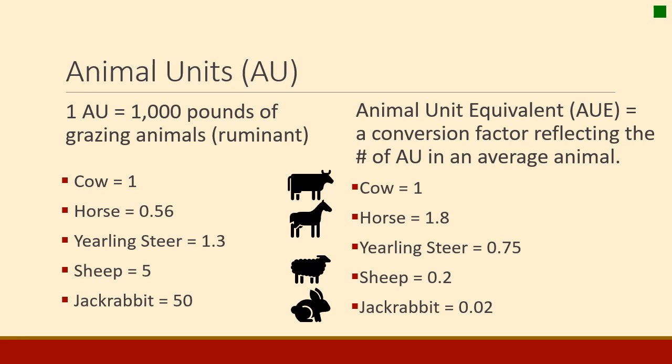For horses, horses eat more than cows, so it takes a little more than half a horse to make an animal unit. Steers eat less than a mature cow, so it takes a few more steers — about 1.3 — to make an animal unit. Sheep weigh about one-fifth of a cow, so they eat about one-fifth as much, meaning it takes five sheep to make one animal unit. You can do this for almost any animal on the range, including jackrabbits — someone published that it would take 50 jackrabbits to make an animal unit.